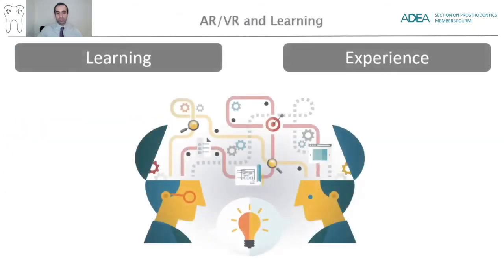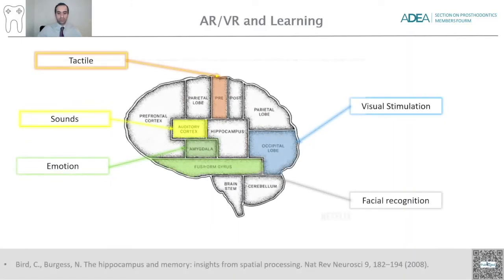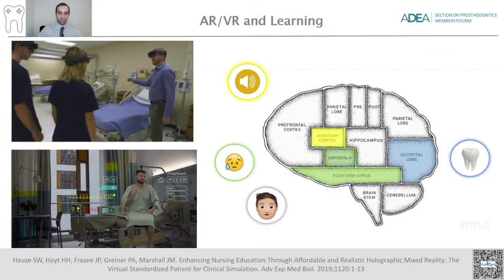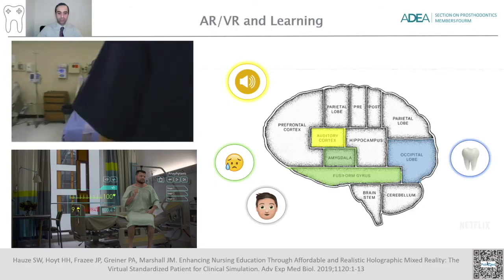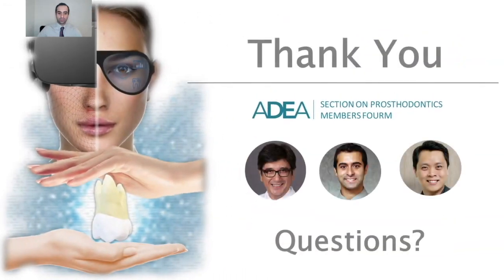Think about how students learn and how they gain experience — you'll come across the term associative learning. Associative learning is the process by which multiple stimuli from a given experience, like tactile, sound, motion, visual simulation, and facial recognition, can come together in the brain to create a lasting memory or experience. This is where AR can come in. By creating virtual objects in a real space, it can simulate reality and trigger various stimuli in the brain to create a more profound experience. The take-home message is that AR and VR are developing fast, have the potential to create more immersive simulations, and have the potential to engage students in associative learning. We hope you enjoyed our presentation and we are open for questions.